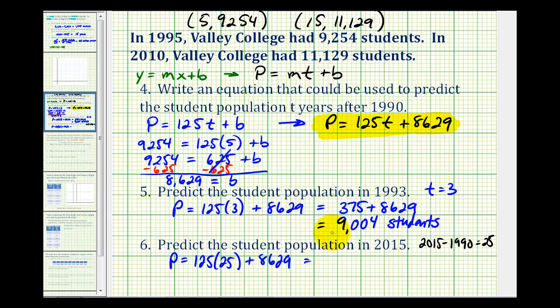125 times 25 is equal to 3,125, and the sum is equal to 11,754, which would be the prediction for the student population in the year 2015.